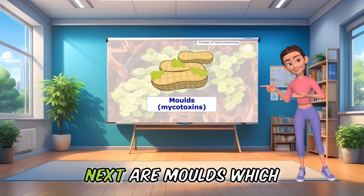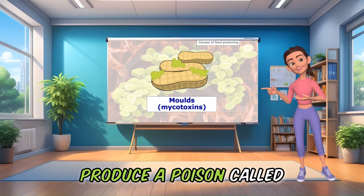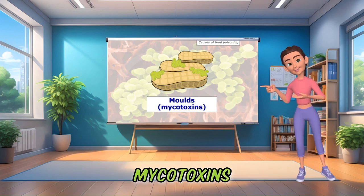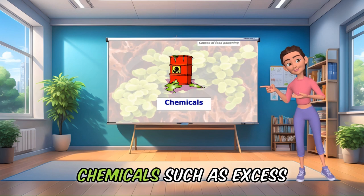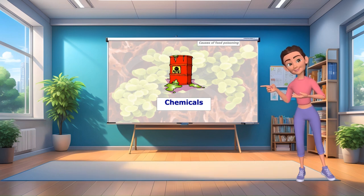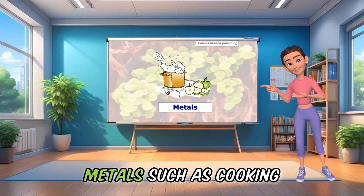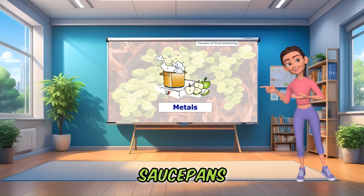Next are moulds, which produce a poison called mycotoxin. Chemicals, such as excess additives. Metals, such as cooking acidic food in aluminium saucepans.